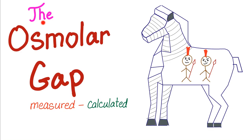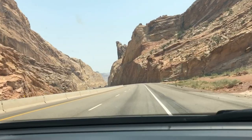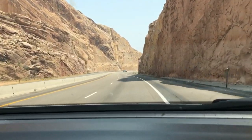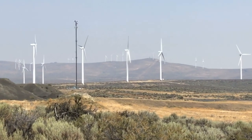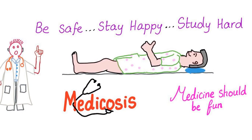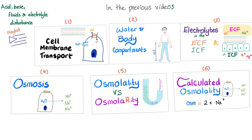Hey guys, it's Medicosis Perfectionalis and this is the seventh video in our series about fluids, electrolytes, and acid-base disturbance. Today we're going to talk about the osmolar gap — call it osmolar or osmolal gap, it doesn't matter. Measured osmolality minus calculated osmolality. If you subscribe to my channel and go to my playlist about acid-base, fluids, and electrolyte disturbance, you will find all of these videos in the playlist. Today is the seventh.